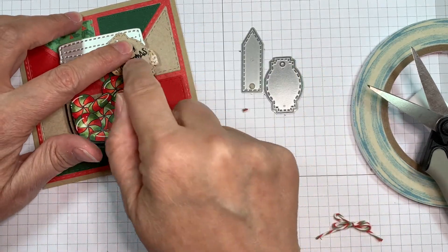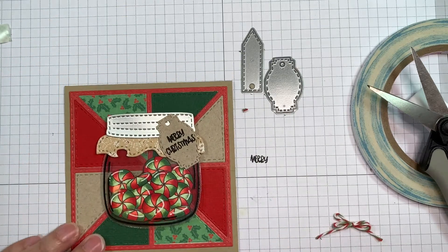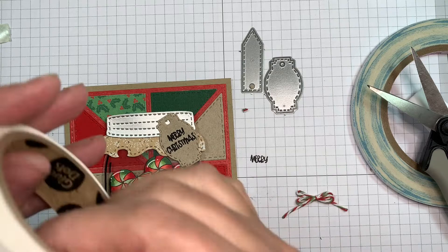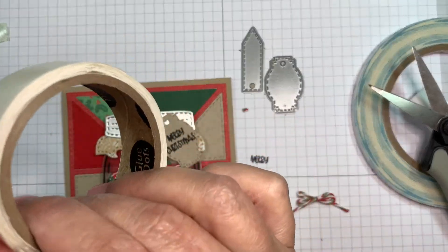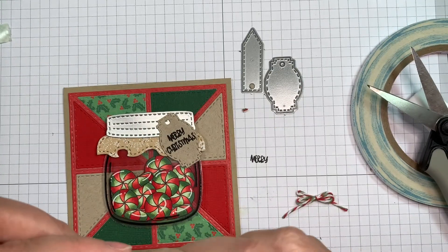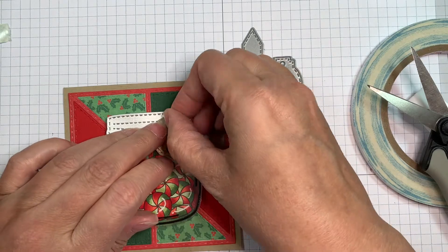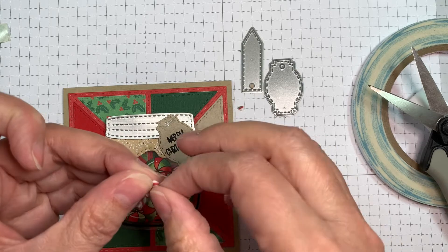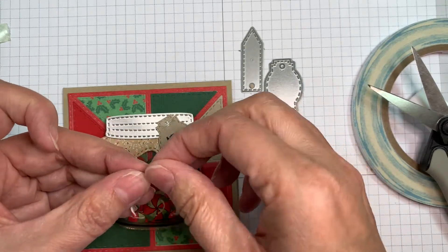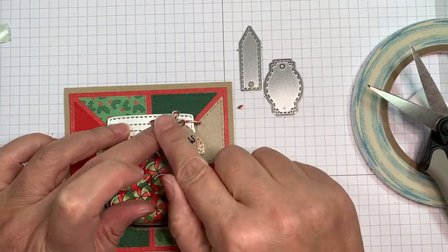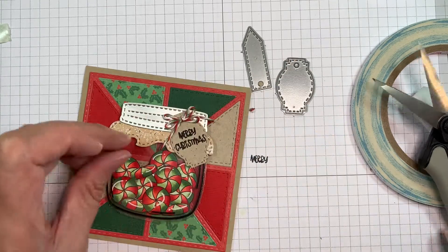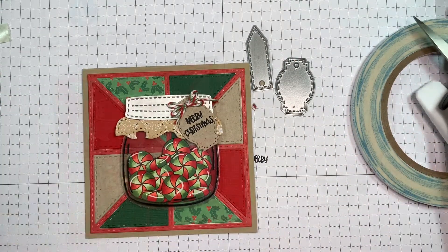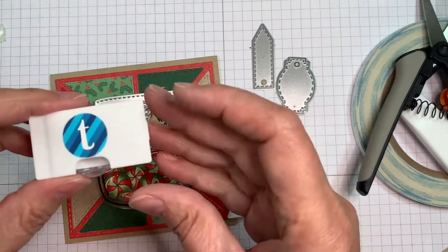Now you could also use StazOn ink if you wanted to stamp the jars in that. So I did stick that little tag down using ATG tape. And now I'm going to roll up a little glue dot. And I will stick it behind the trendy twine so I can add that to the top of the little tag there. And I'm not sure what this trendy twine is called, but I know it's a Christmas brand or Christmas name.